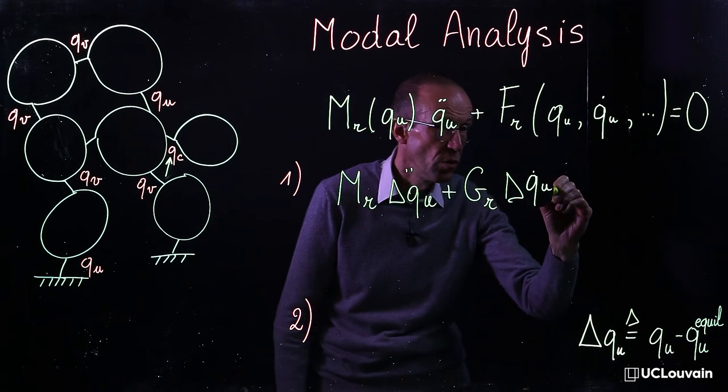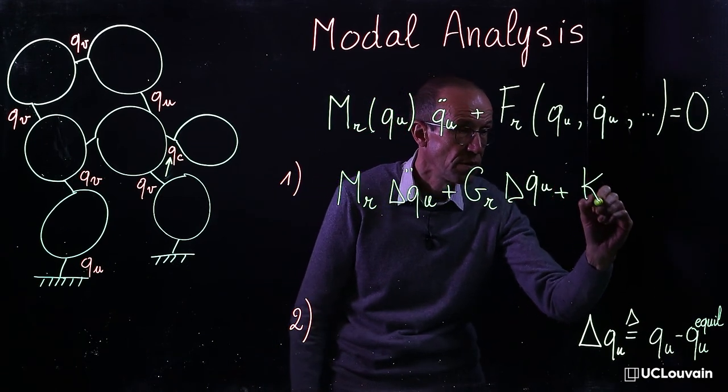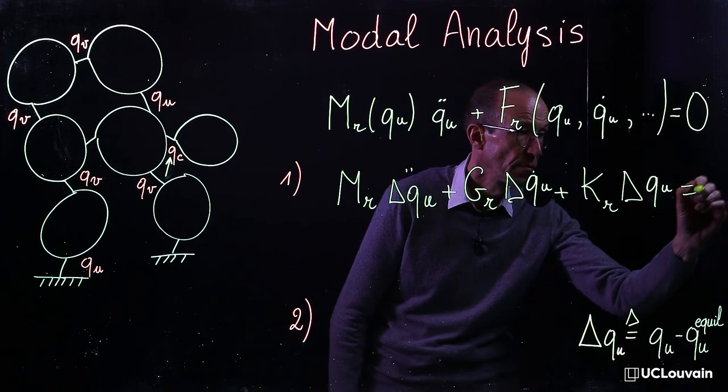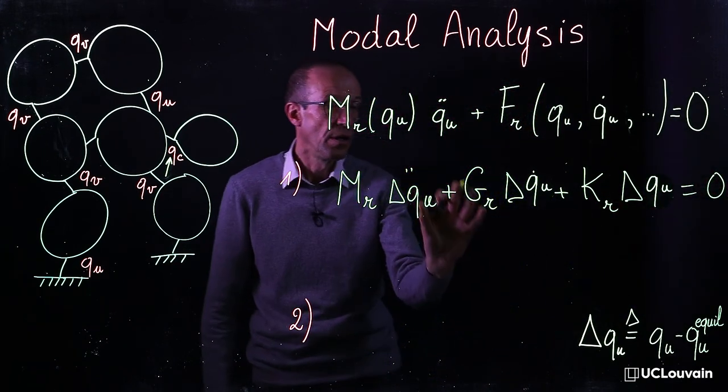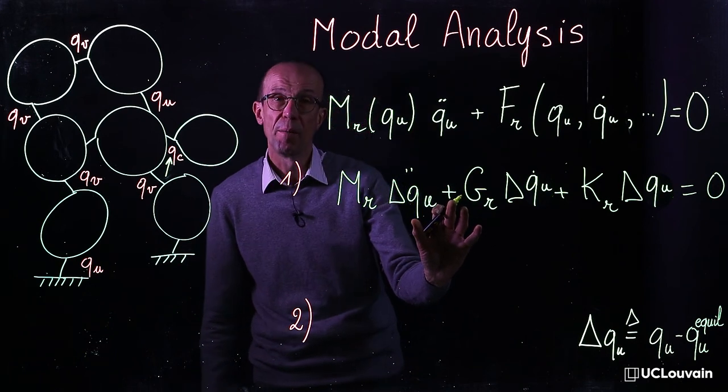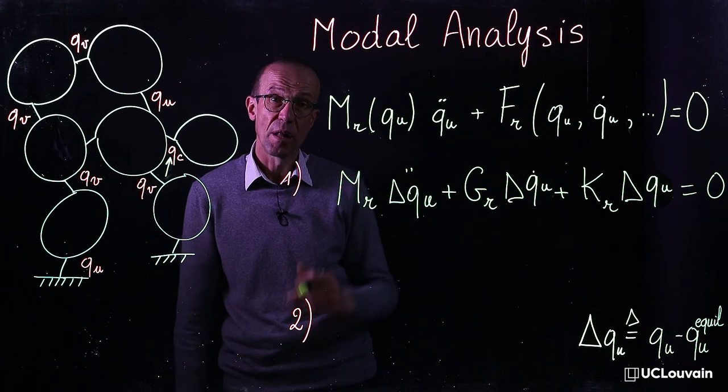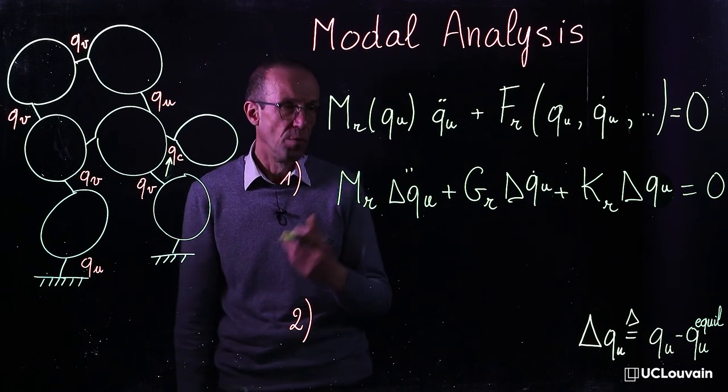In this equation you see two new matrices appearing. The first one is the so-called damping matrix and the second one is the so-called stiffness matrix that can be computed numerically.